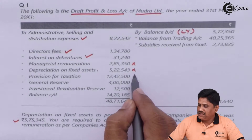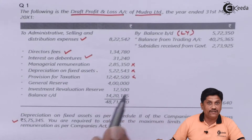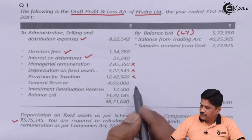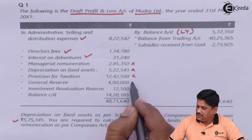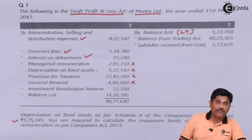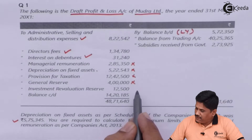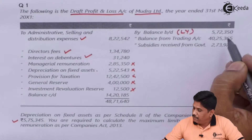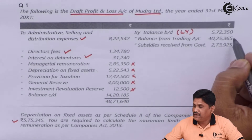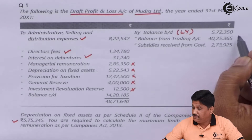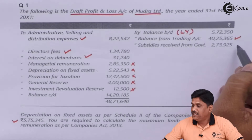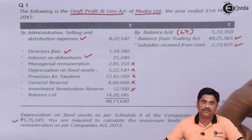Provision for tax is not to be considered — any kind of provision is not allowed as per Section 198. General reserve is an appropriation of profit, not an allowable expense. Investment remuneration reserve is also not an allowable expense. On the credit side, the balance from the trading account is the gross profit and is a major income to be considered. Subsidies from the government are also considered as income.